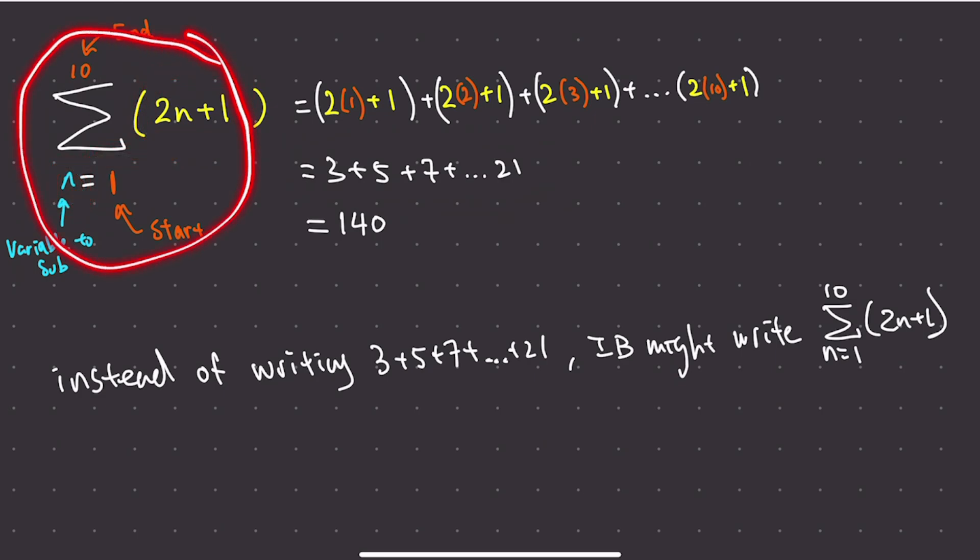Now what does this whole thing mean? Well, you see this formula - it means this formula is repeated every single time in the addition. And what you do is you're subbing in the starting number into the formula. So that's why we have 2 times 1 plus 1.